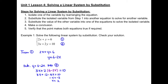Step 3: substitute the value of the other variable into one of the equations to solve for the isolated variable. We substitute x equals 2 into the isolated variable y equals 6 minus 2x, and we get y equals 2.